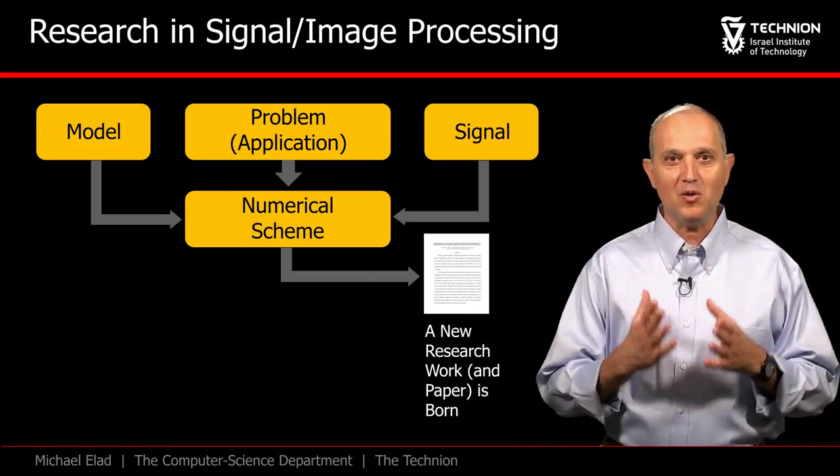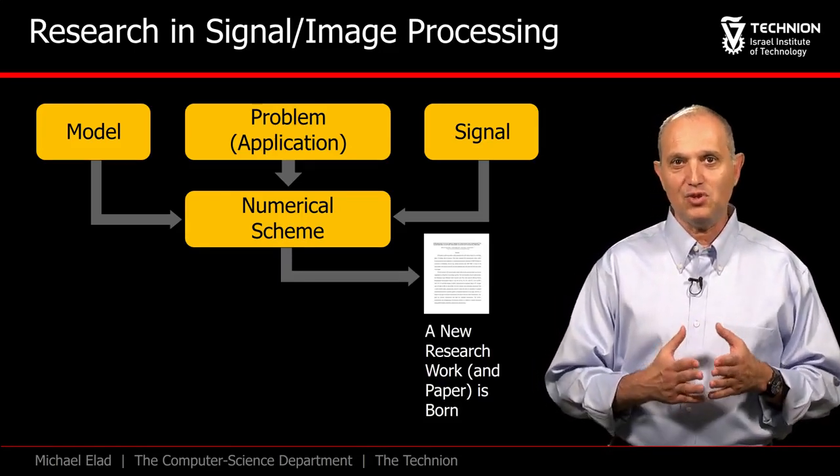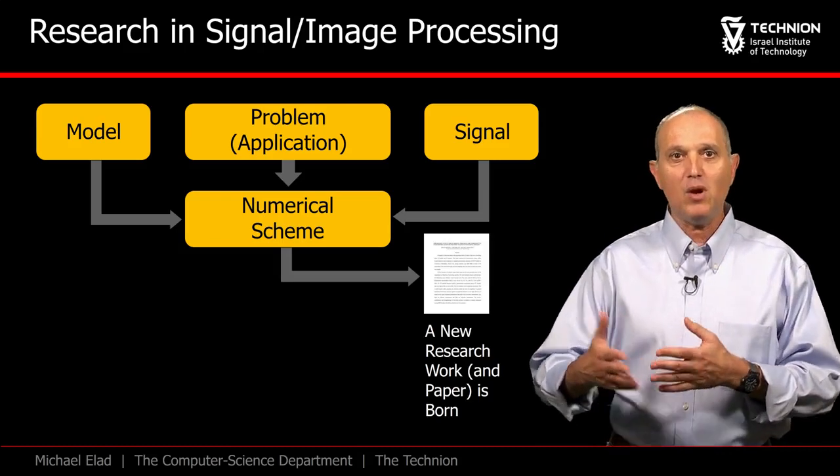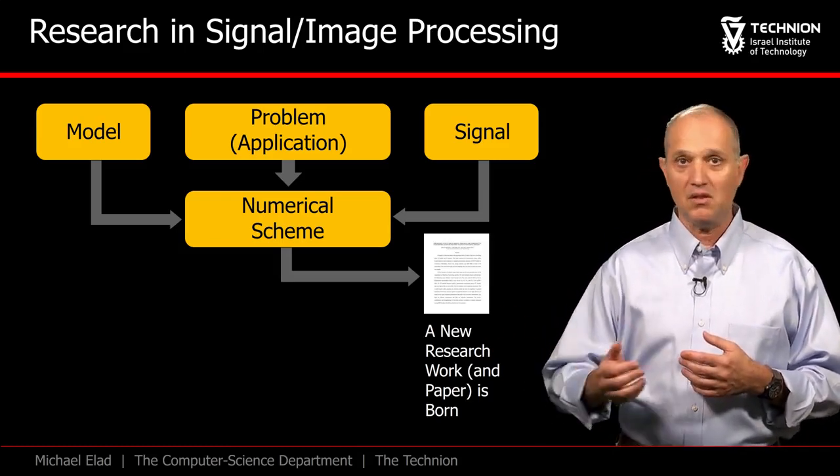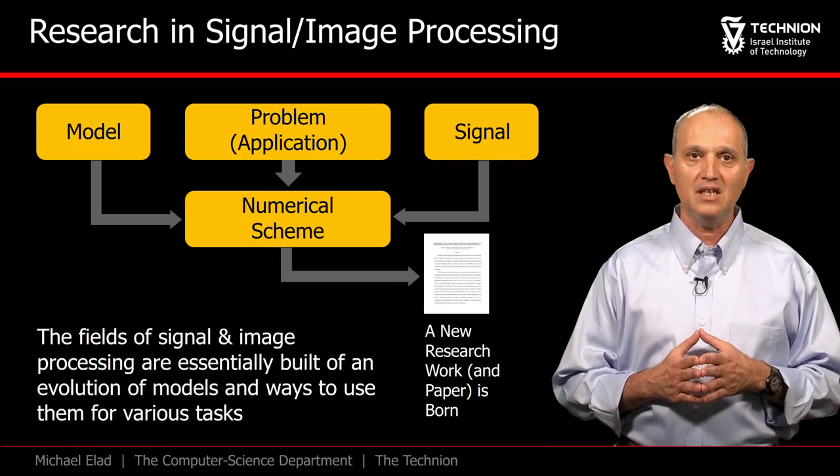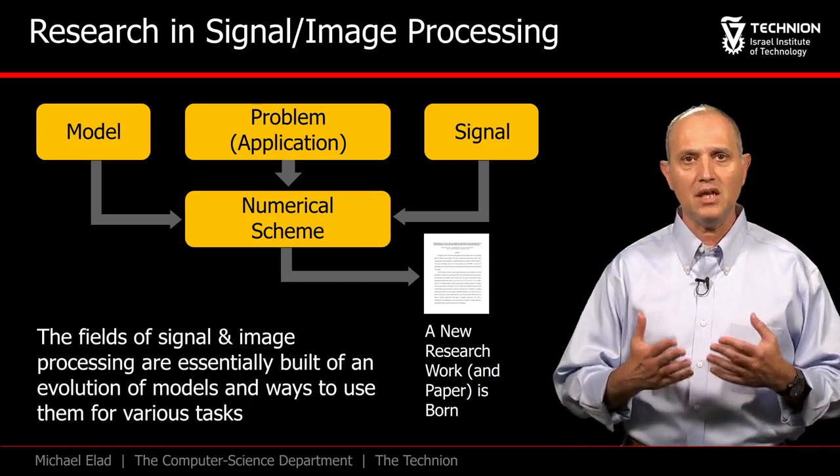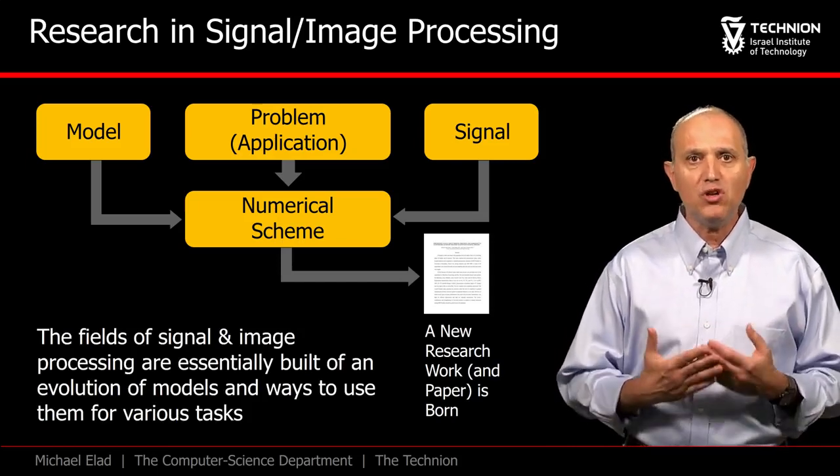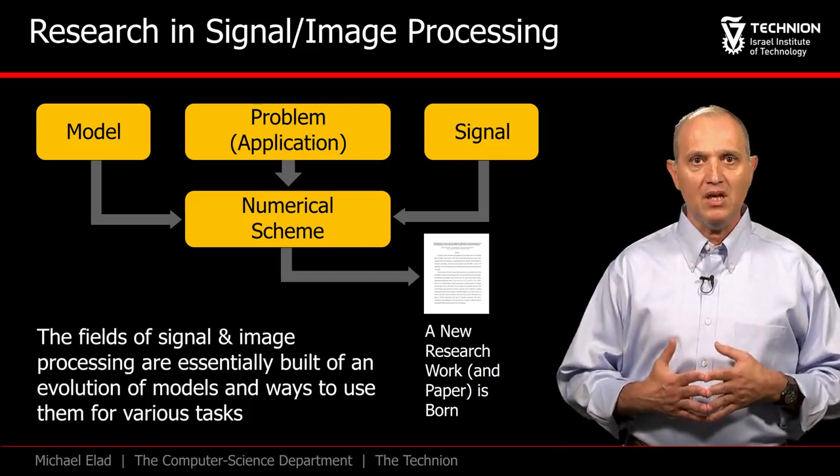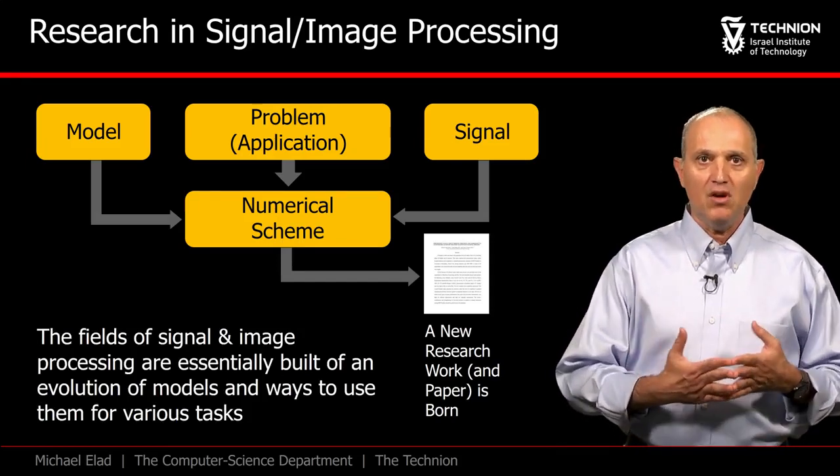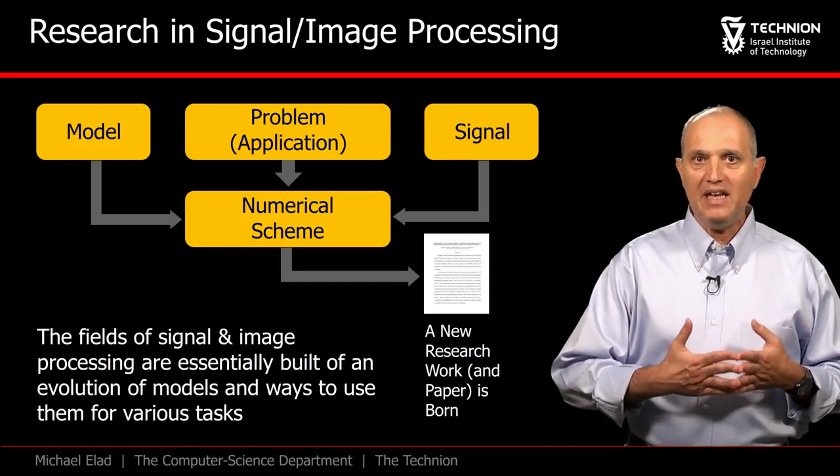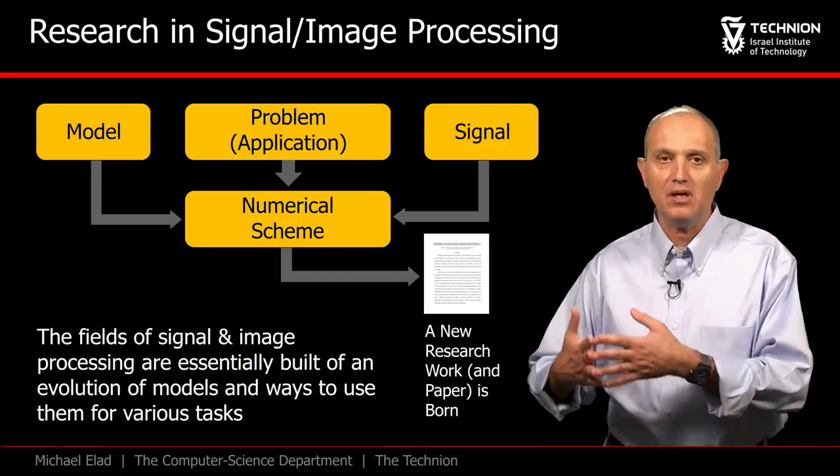If you want to write your own paper, it would be sufficient to start from such a paper and modify one of these blocks, such as replacing the signal of interest, the model, etc. Indeed, the literature in signal and image processing is an evolution of models, improving over time and developing ways to use them for different tasks, leading to better and better performing algorithms.